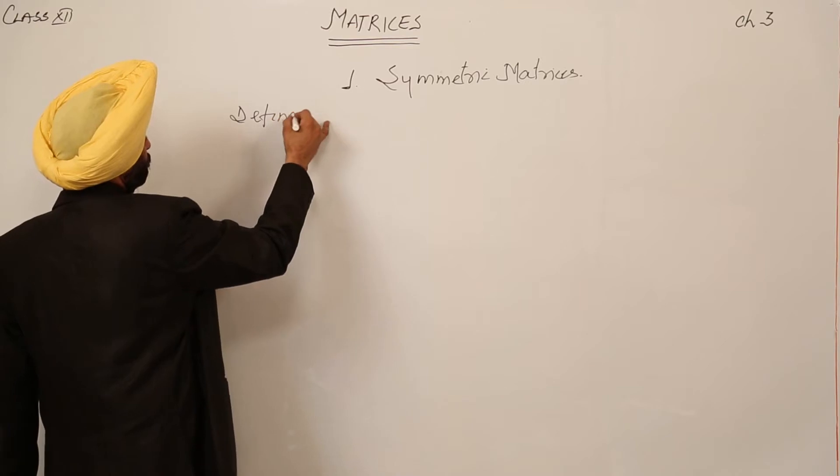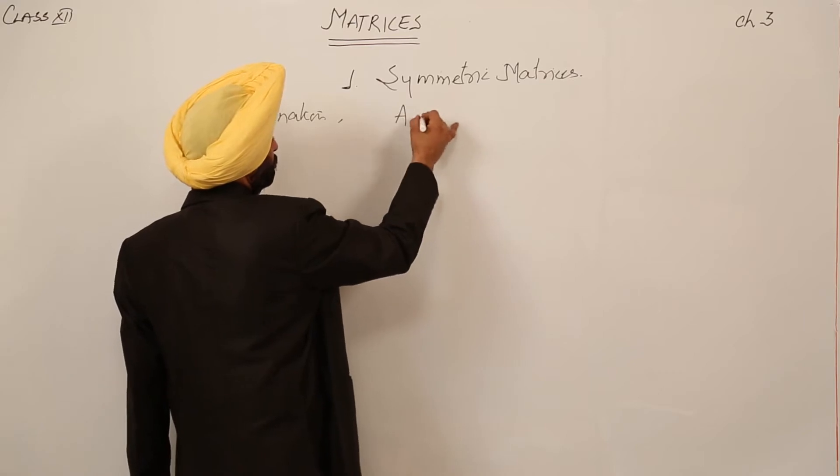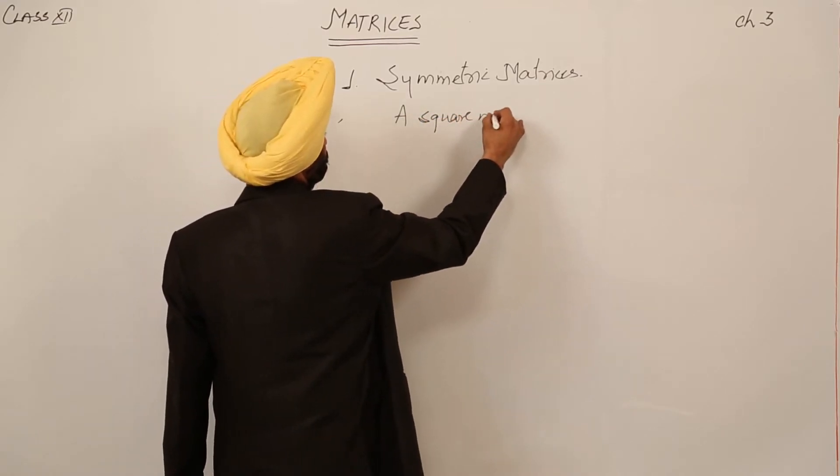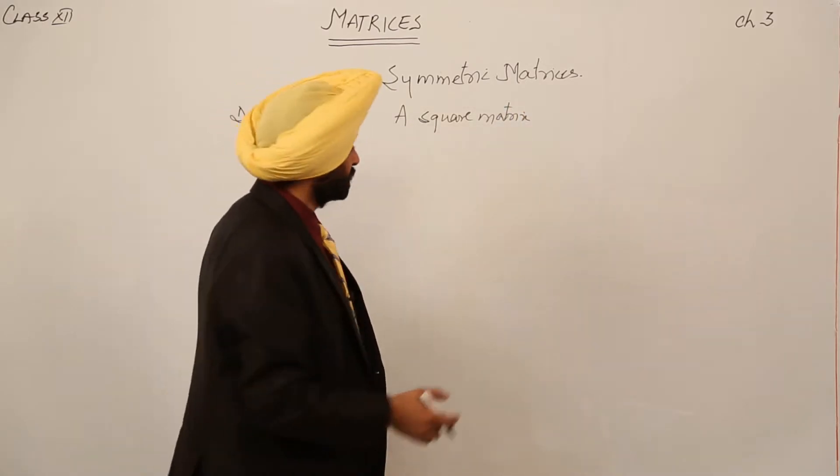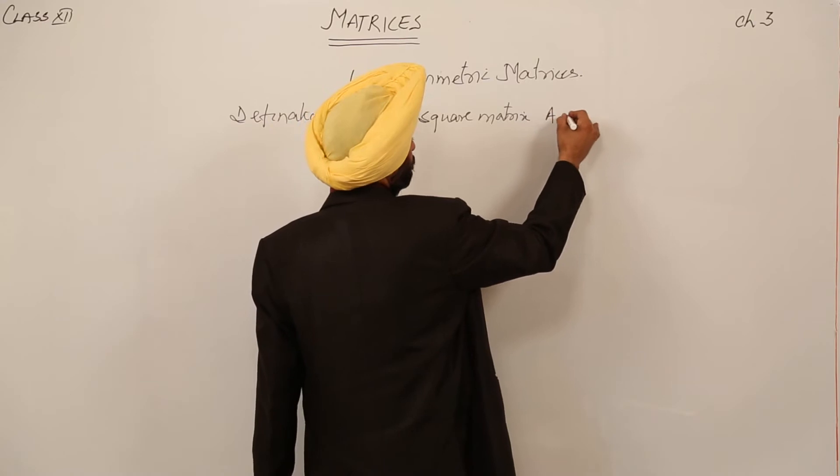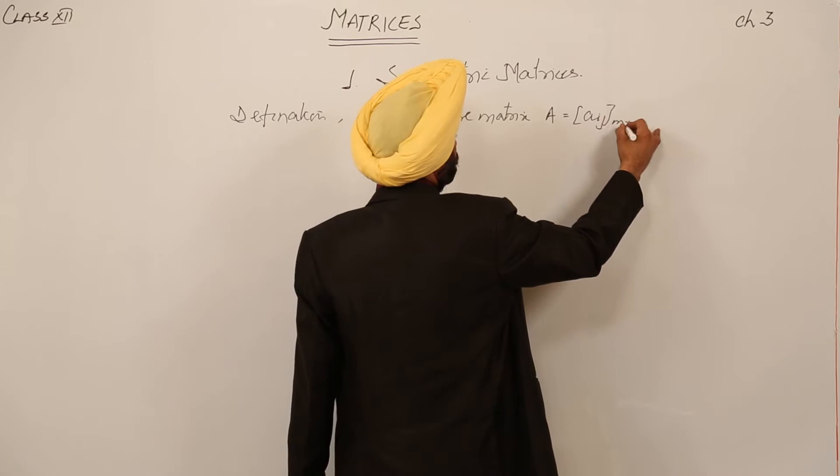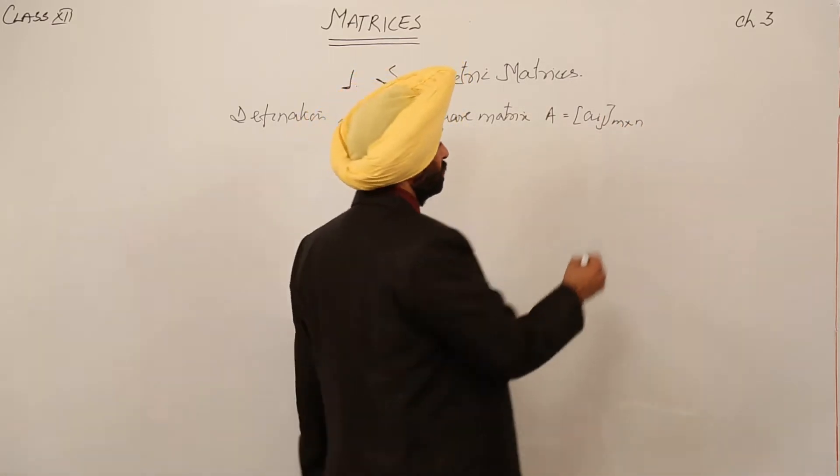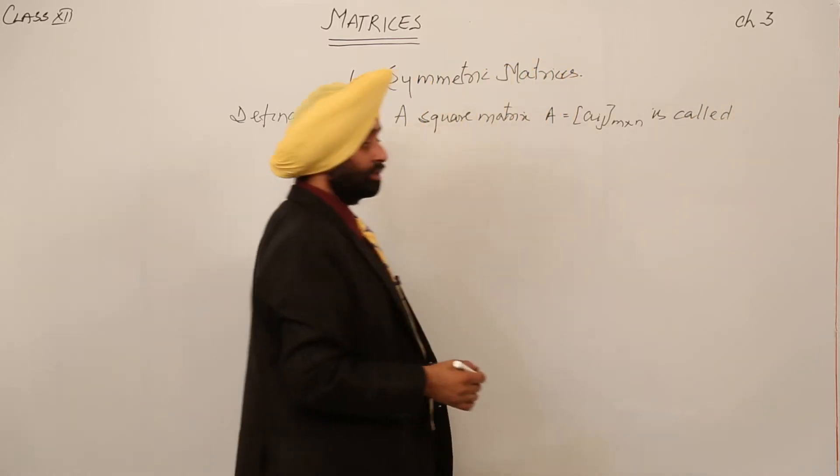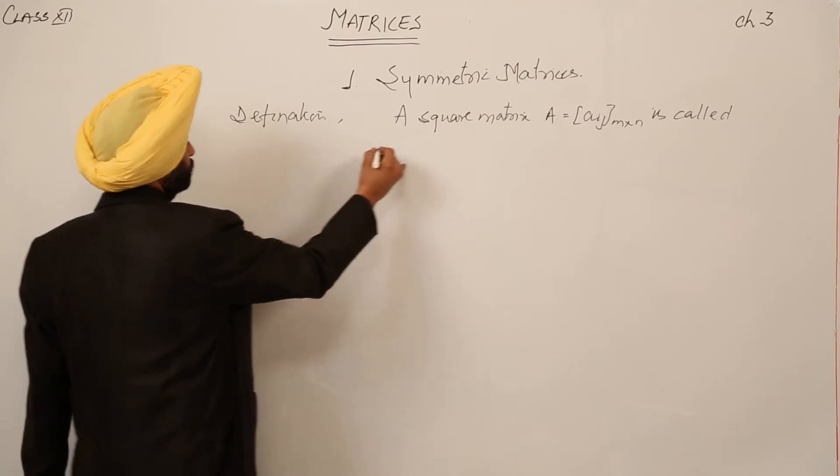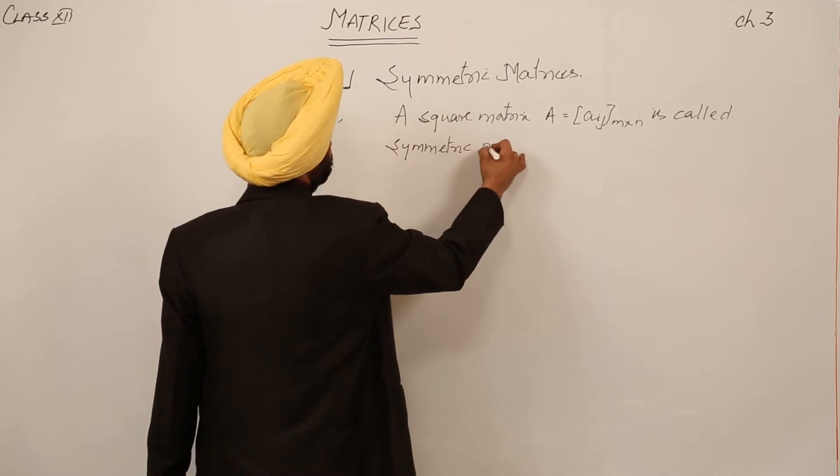Definition: A square matrix. First thing is, it should be a square matrix. A square matrix A equal to A_ij for order m by n is called symmetric matrix. It is called symmetric matrix.